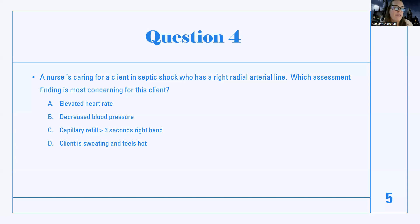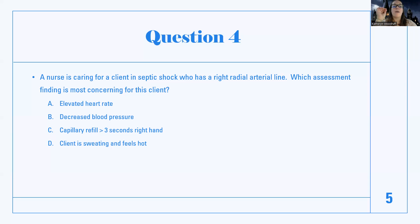Answer C: capillary refill greater than three seconds in the right hand. I don't like that — the radial arterial line is on that side. Answer D: client is sweating and feels hot — they have septic shock with an infection, so a fever is expected. So A, B, and D are all expected findings in sepsis. C is the most concerning: capillary refill should be less than three seconds, and if there are signs of decreased perfusion to the hand, it can mean the arterial line is occluding the artery. That's why we do Allen's test before insertion — we must monitor circulation closely for anyone with an arterial line. The most concerning finding is C.